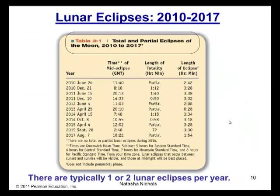Here's a table of the total and partial eclipses of the Moon, the years 2010 to 2017. On the first column, it gives you the date that this will occur. The second column gives you the time, and time is given in GMT, which is what GMT stands for. On the third column, it gives the length of totality, so for how long does it last. And on the fourth column, it gives the length of the eclipse, and that does not include the penumbral phase. There are typically one or two lunar eclipses per year.